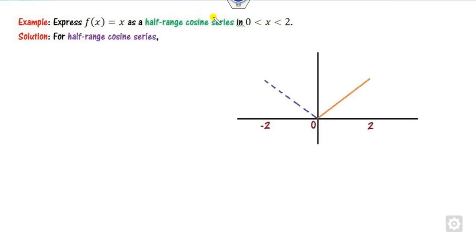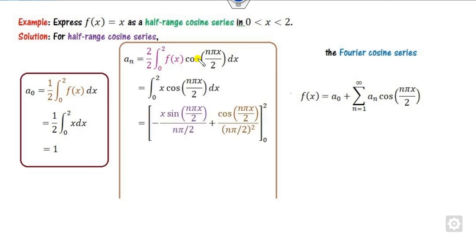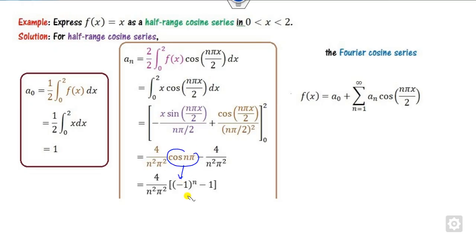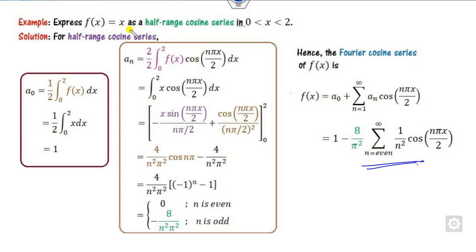Now we look at the same function but find the cosine series instead. Since the domain is 0 to 2, instead of extending toward the origin we make a symmetric axis toward the y-axis, creating an even extension. Our target is to expand the Fourier series over minus 2 to 2. For the cosine series we compute a₀ and aₙ. Substituting f(x) and integrating — noting that sin(nπ) = 0 and cos(nπ) = (−1)ⁿ — when n is even the answer is 0, otherwise it is nonzero, giving the required half-range cosine series.